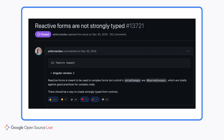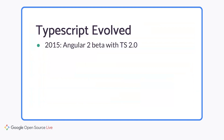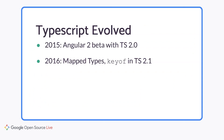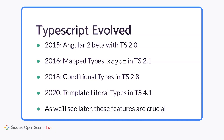We have made previous investigations into typed forms. But just as Angular has evolved, so has TypeScript. TypeScript was actually quite new when Angular first entered beta — Angular shipped with TypeScript 2.0. In 2.1, TypeScript gained mapped types, which give the ability to transform one object type into another. Then conditional types in 2.8, and template literal types in 4.1. These TypeScript features are actually crucial for the typed forms implementation.